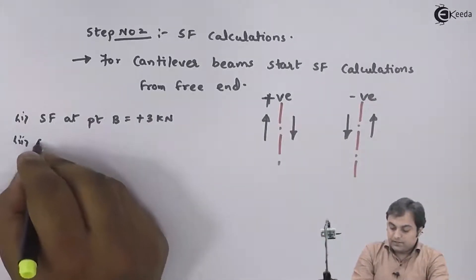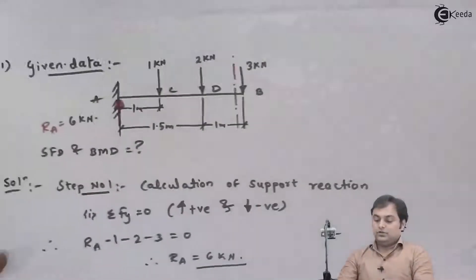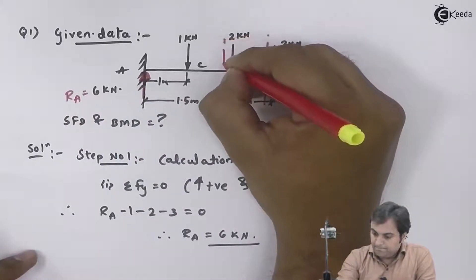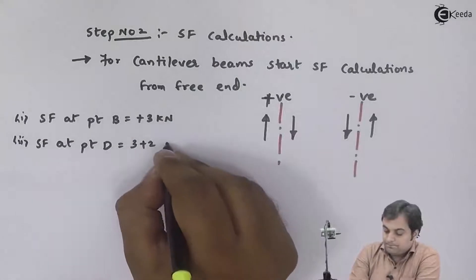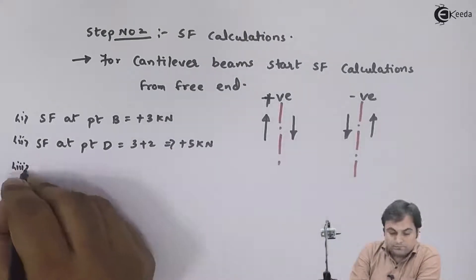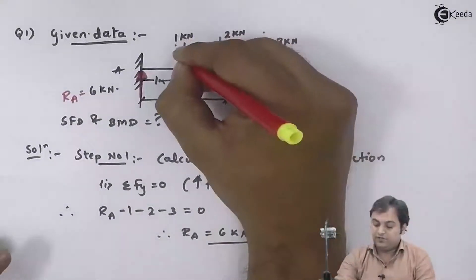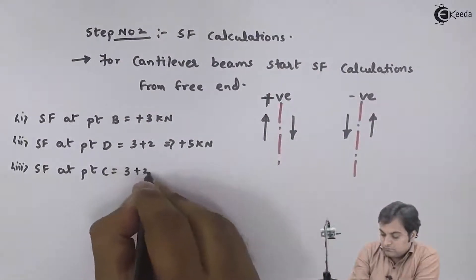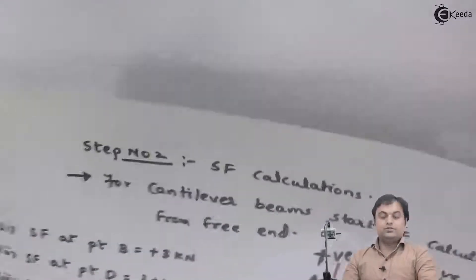Next, SF at point D: taking the section just to the left of D, I have two forces — plus 3 and plus 2 — giving SF at D equal to plus 5 kilonewtons. Then SF at point C: taking the section to the left of C, I have 3 plus 2 plus 1 equal to plus 6 kilonewtons. These are the shear force values, and based on these we can draw the shear force diagram.